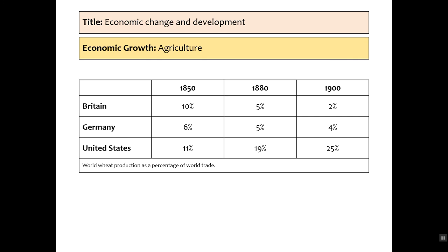So, we have four clear examples showing that the economic growth in this period was not continuous. It was intermittent and interspersed with panics, depression, and strikes.